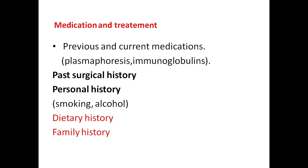Dietary history is important regarding B12 deficiency, and then family history. This is all about the history of paraplegia.